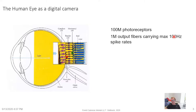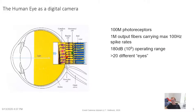The human eye has 100 million photoreceptors but only a million output fibers carrying spikes at most 100 Hz. It has an incredible dynamic range of 180 dB — operating from dark starlight where you can barely see the horizon, up to bright sunlight. There are about 20 different eyes within the eye: not just one or two classes of ganglion cells, but at least 20 different classes computing different aspects of the visual input, which biologists are still trying to understand.